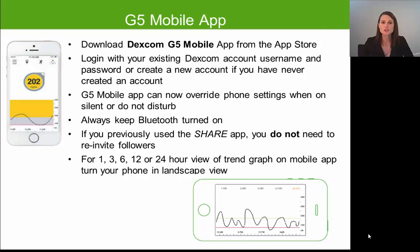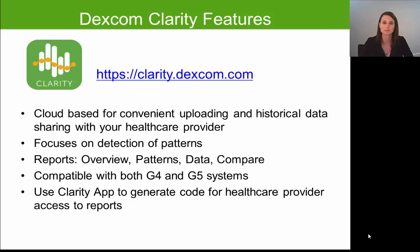On the G5 app home screen, you'll be able to view your three-hour trend graph. If you want to view more information than that, simply turn your phone sideways into landscape mode, and you'll be able to view up to the last 24 hours of glucose information.